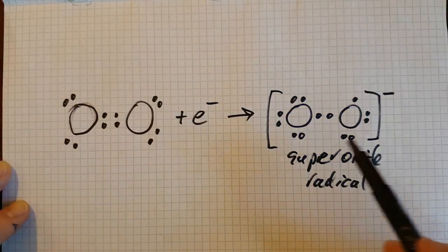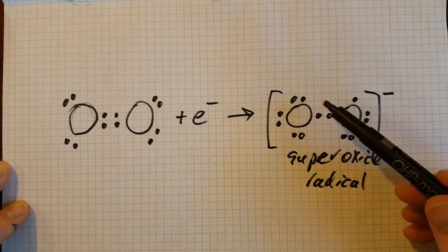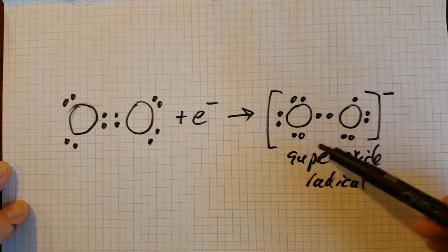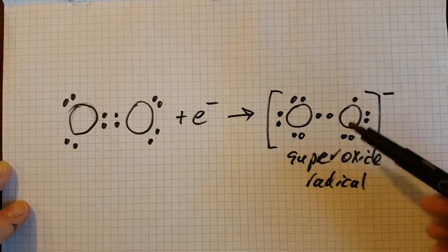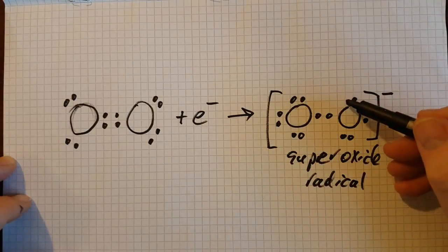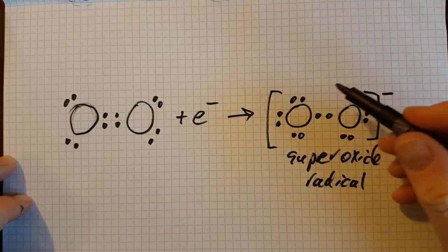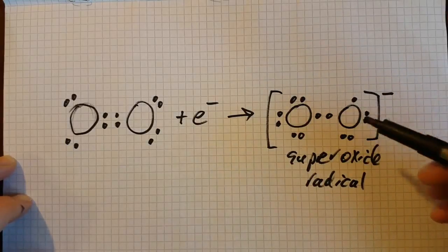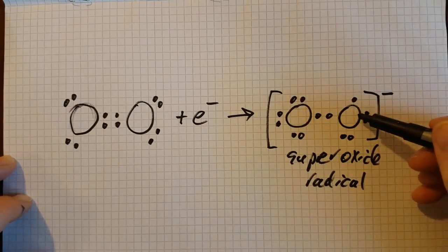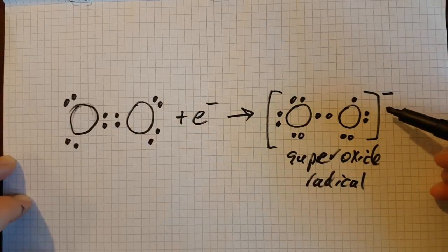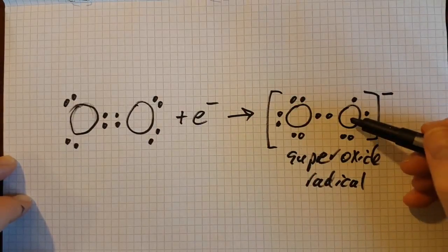Now I don't think they're going to ask you for these Lewis structures—in fact, the internet is kind of controversial about what this one should be. Once again, there's an electron that seems to be missing here, and so this is an oxidizing agent. It wants to be itself reduced. Reduction is gain of electrons, so it wants to gain electrons here.